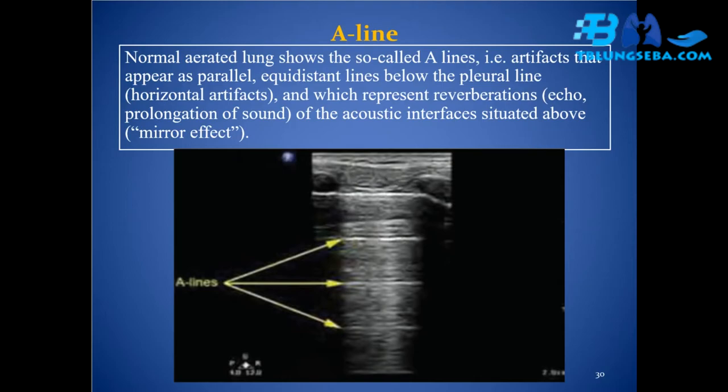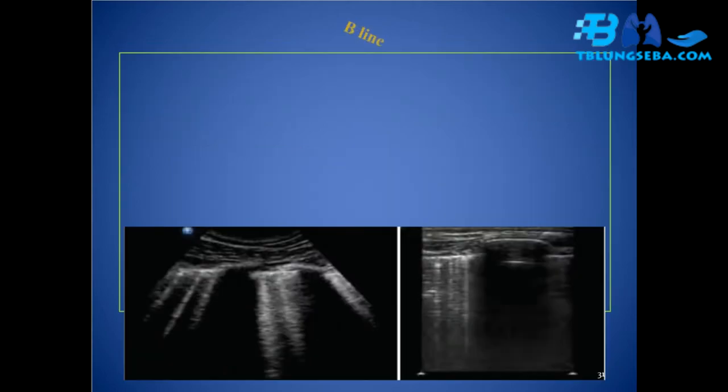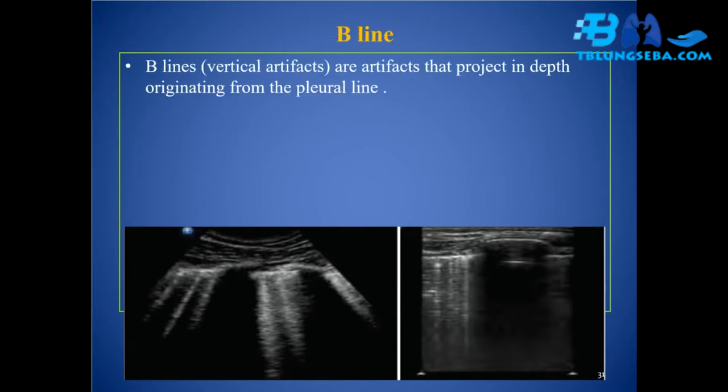A-line: normal aerated lung shows the so-called A-lines — artifacts that appear as parallel equidistant horizontal lines below the pleural line. These represent reverberations, an echo prolongation of sound of the acoustic interface situated above (mirror effect).